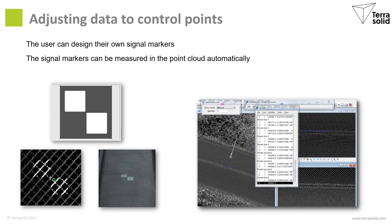As mentioned, you can use signal markers as control points for adjusting the data. These signal markers you can define yourself in the software, so that you can make a picture of how the signal marker looks like. Then you start the automatic search for finding these signal markers in the LiDAR point cloud. These measurements can be used for adjusting the point cloud to the control points in the area.